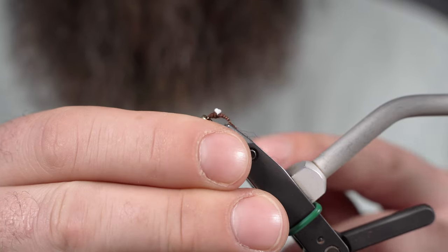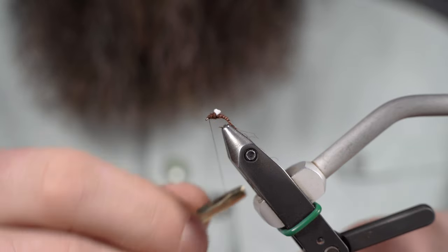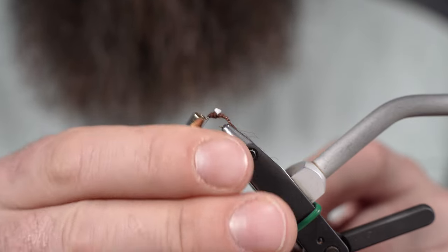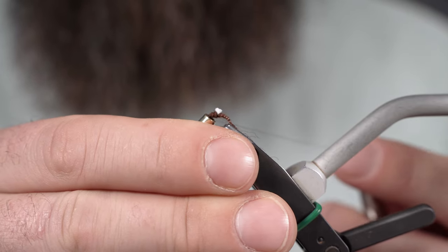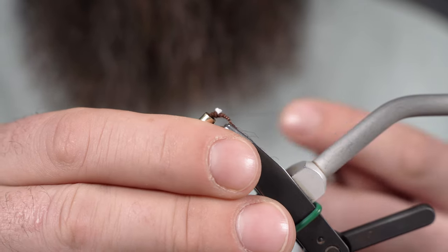Couple more half hitches. I'm actually using this little Dr. Slick half hitch tool when it comes to small flies like this. I don't really like doing whip finishes necessarily if I can keep away from doing that.